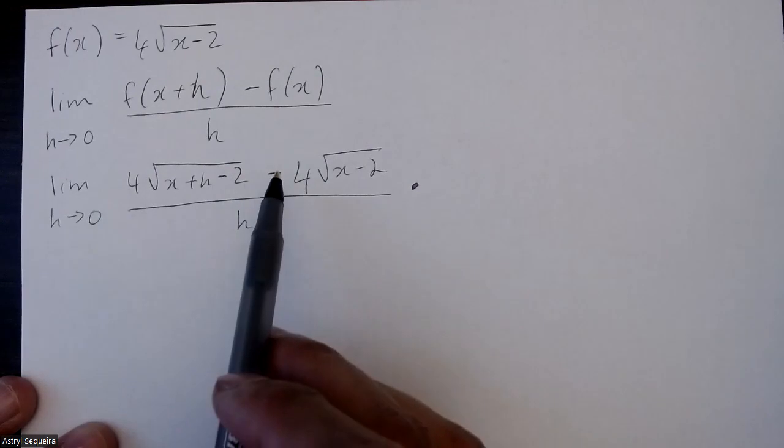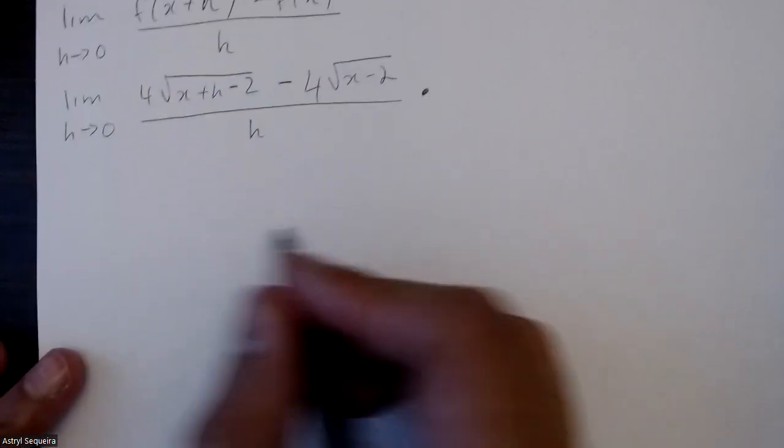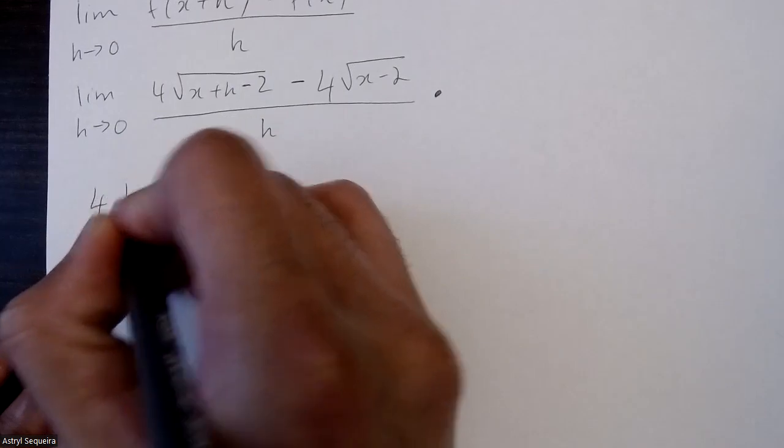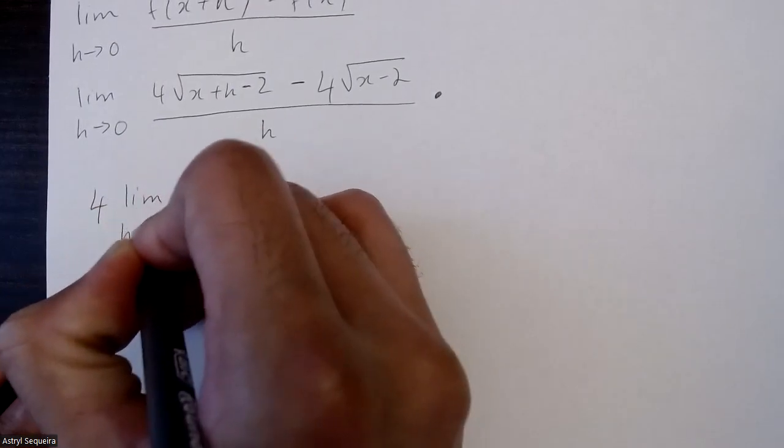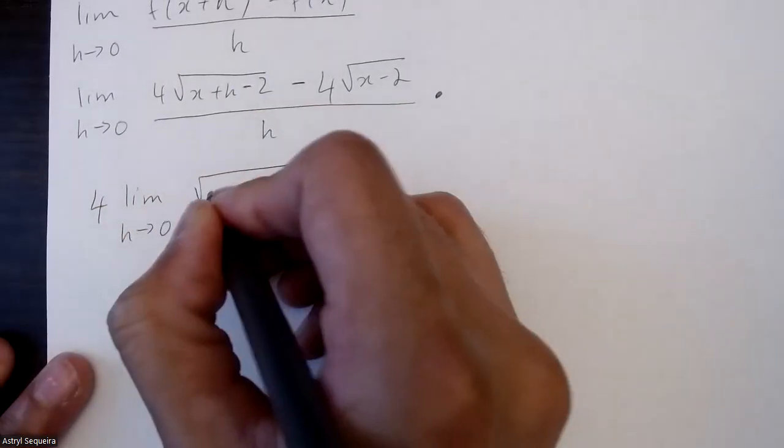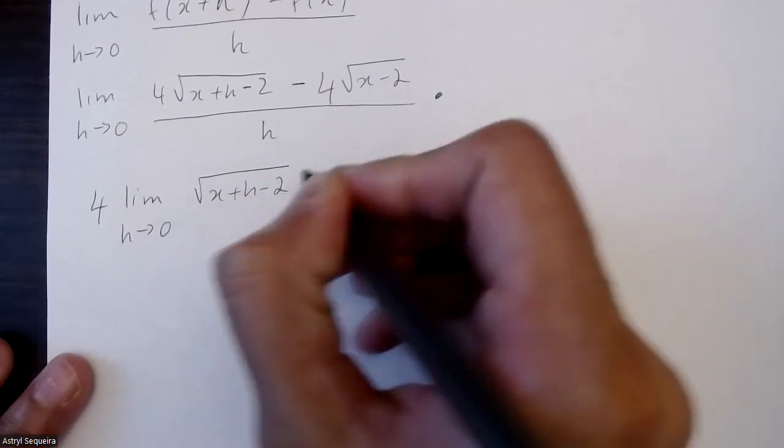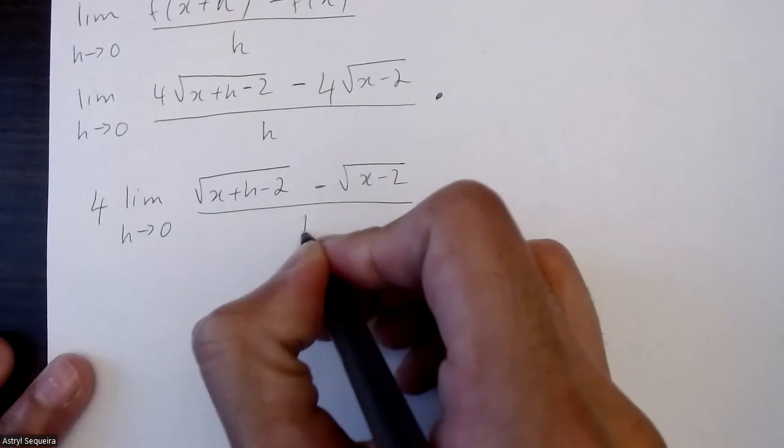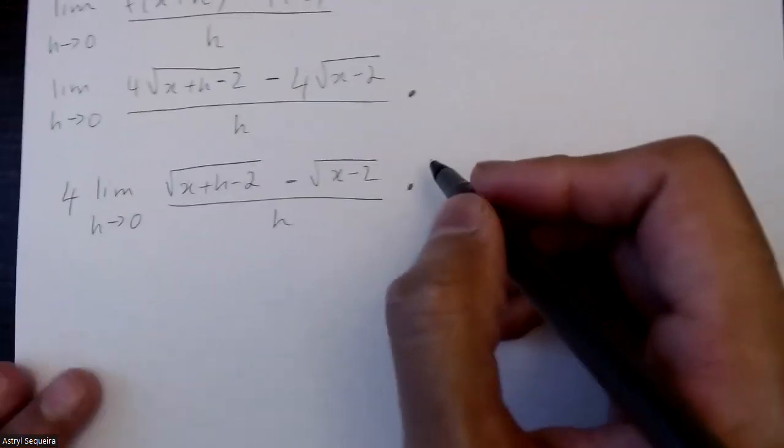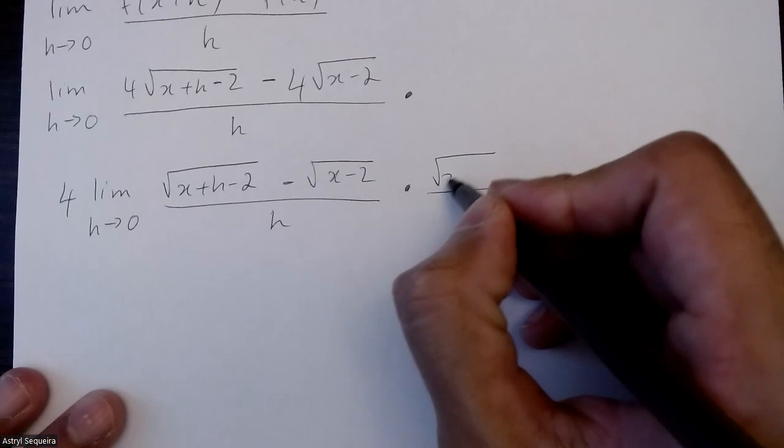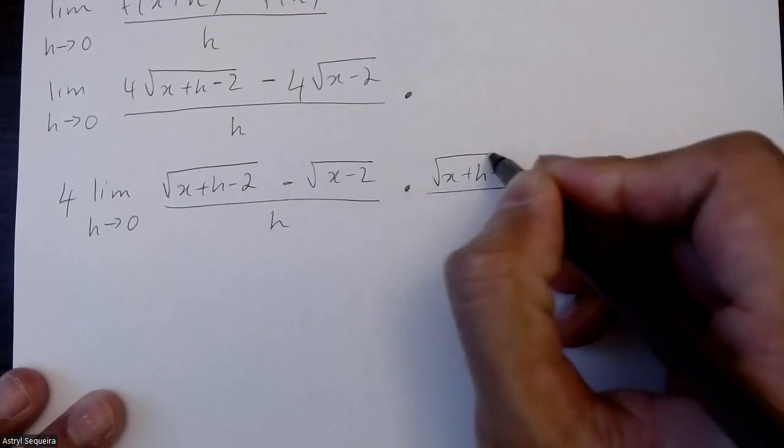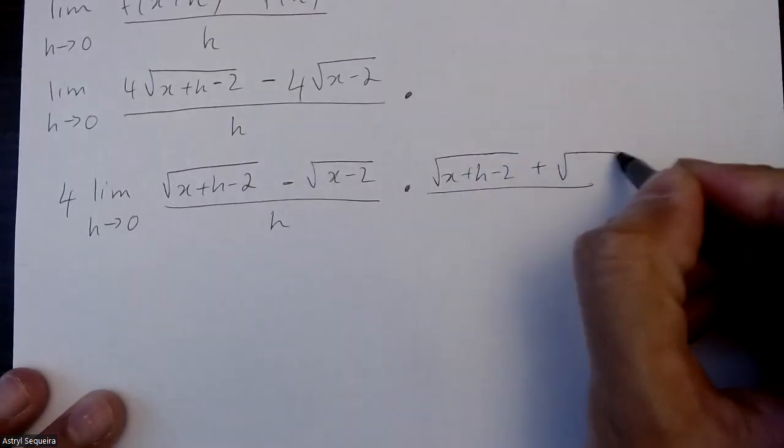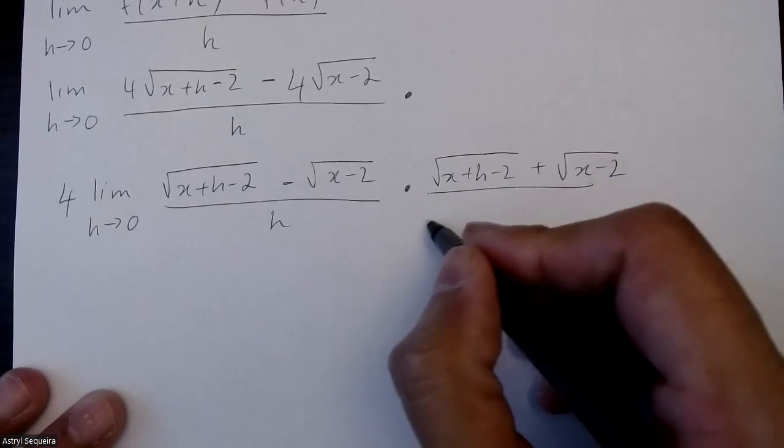Now one more thing is, in this question, because we have a common factor of four, I can actually common factor this out before I do that step. So I'll common factor out the four first and it's going to make it a bit easier. Now I'll multiply the top and bottom by root x plus h minus 2 plus root x minus 2.